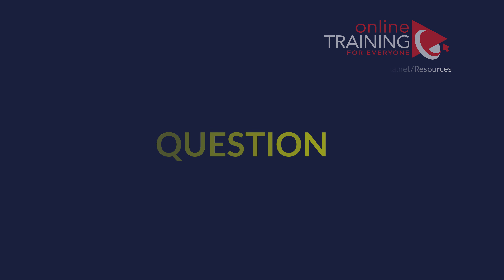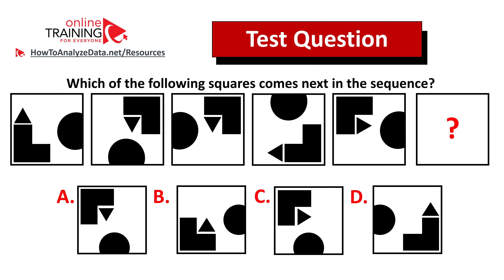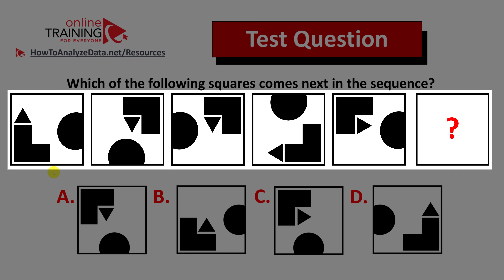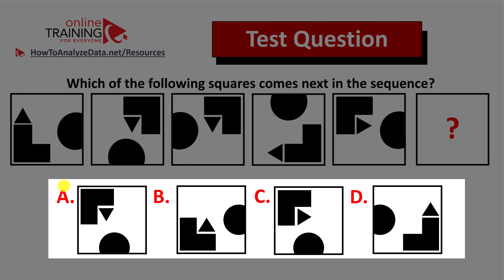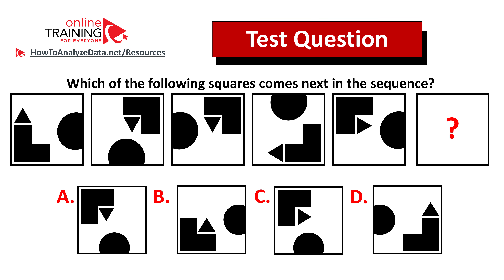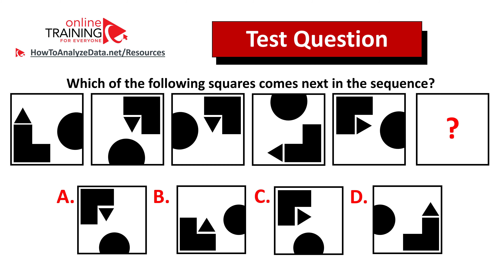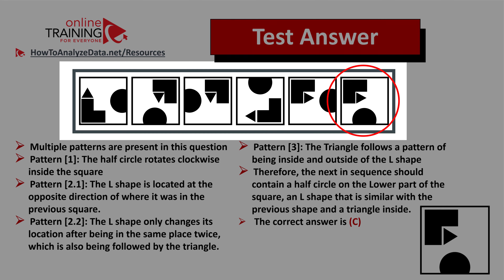Let me share with you a tricky question which tests your pattern recognition as well as analytical skills. Which of the following squares comes next in the sequence? You're presented with a sequence of five squares and the fifth square is missing. You have four different choices to choose from — A, B, C, and D. Do you recognize the pattern? Give yourself 10 to 15 seconds to look closely and see if you can recognize which shape should be selected. As usual, my recommendation is always look for patterns. Let me share with you which patterns are present in this question.